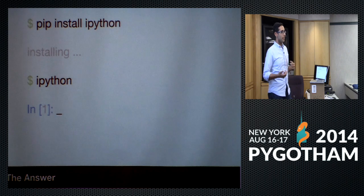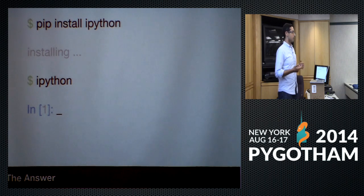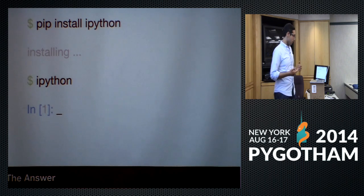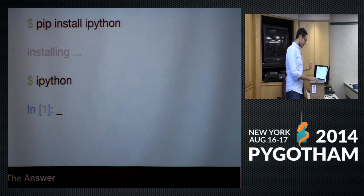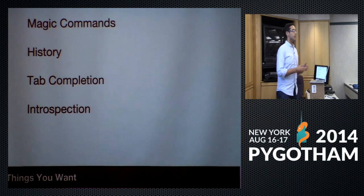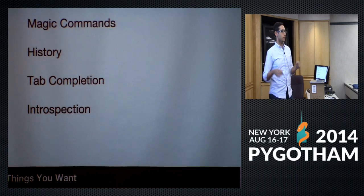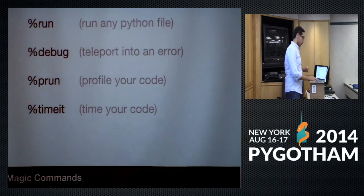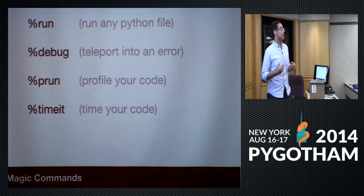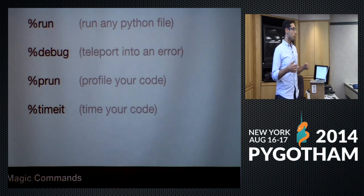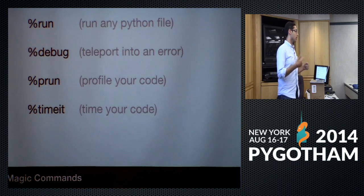The interpreter I like is IPython. I use it in the command line, which according to our keynote speaker makes me a hipster. IPython is great for a couple of reasons — I'm going to talk about four of them. The first is it allows you to have a number of very cool magic commands: commands you can type in the interpreter that do special things the normal Python interpreter cannot do.